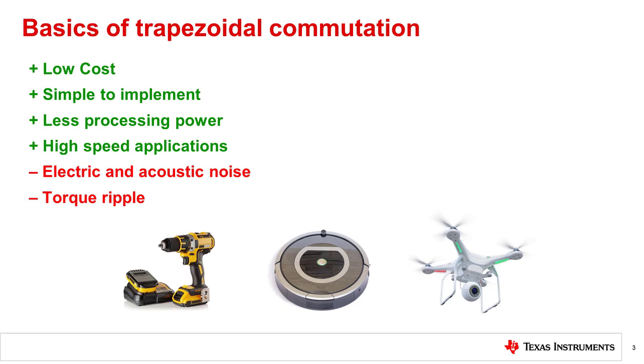Trapezoidal commutation is popular because of its simplicity, low cost, and reliability. It's the easiest commutation technique to implement compared to sinusoidal and field-oriented control. Its simplicity reduces design time and cost, especially in terms of processing power used for the control algorithms. It's very common in high-speed applications or applications where a high starting torque is required, such as in power tools, vacuums, drones, and others.